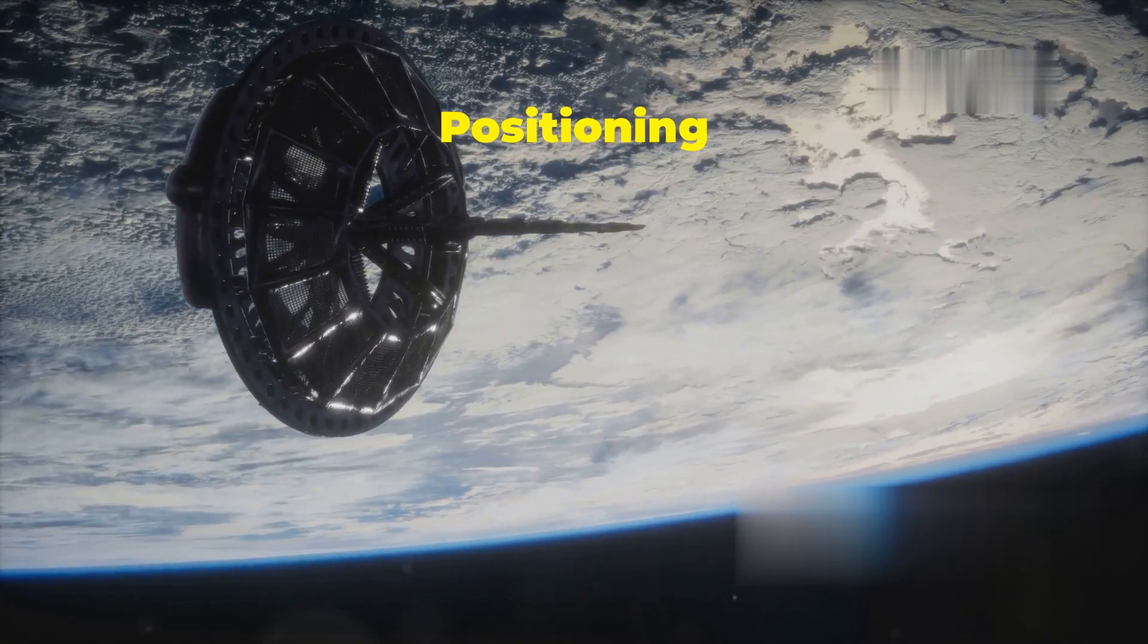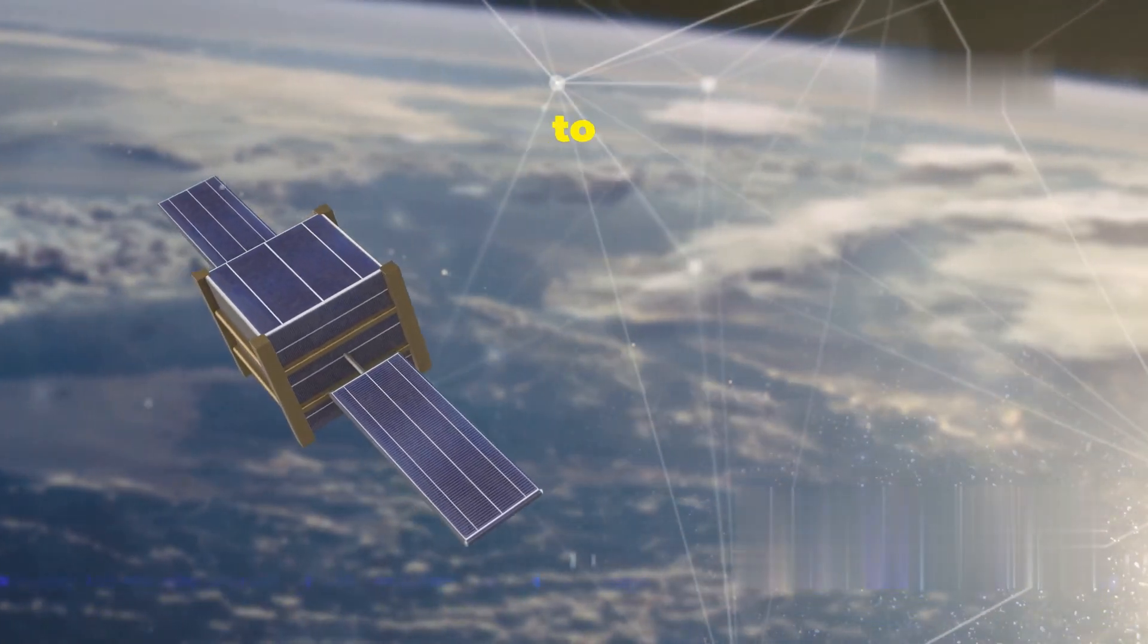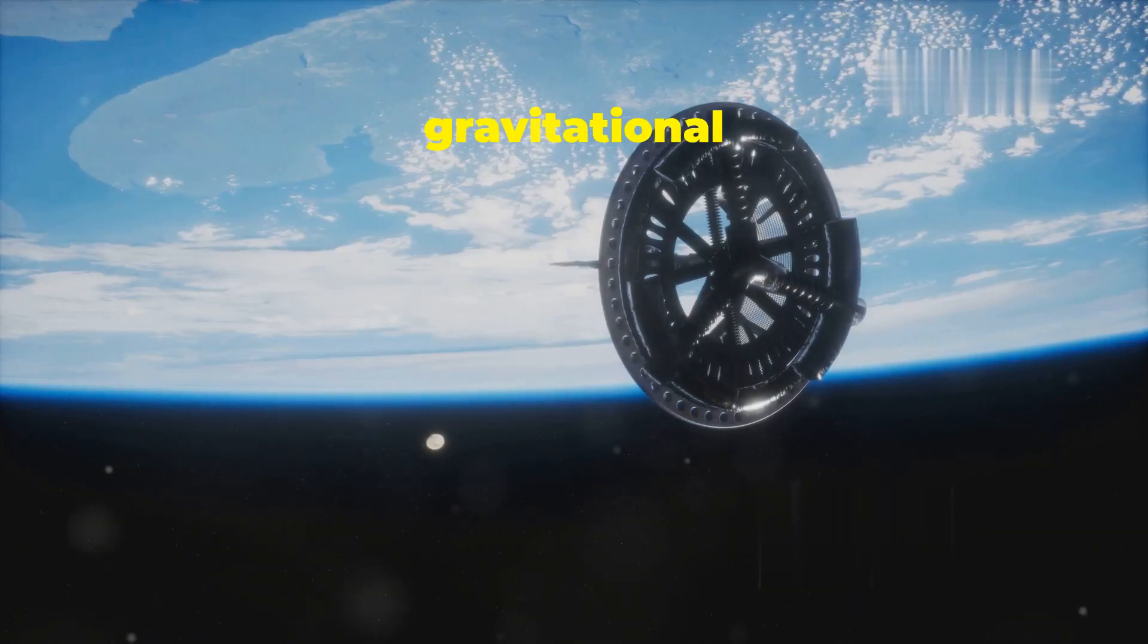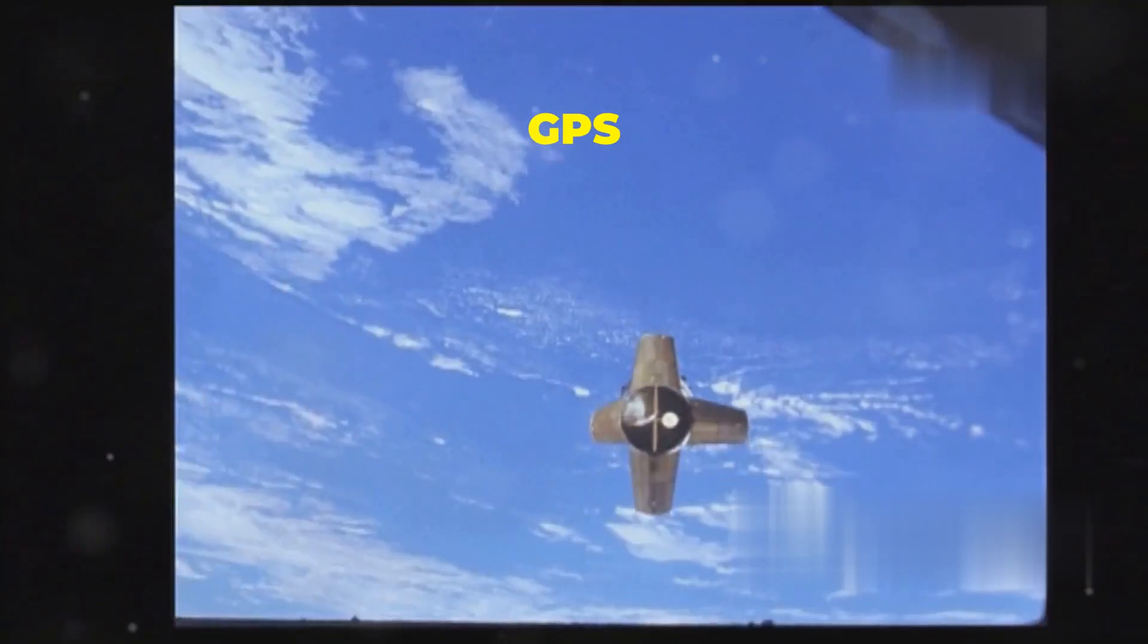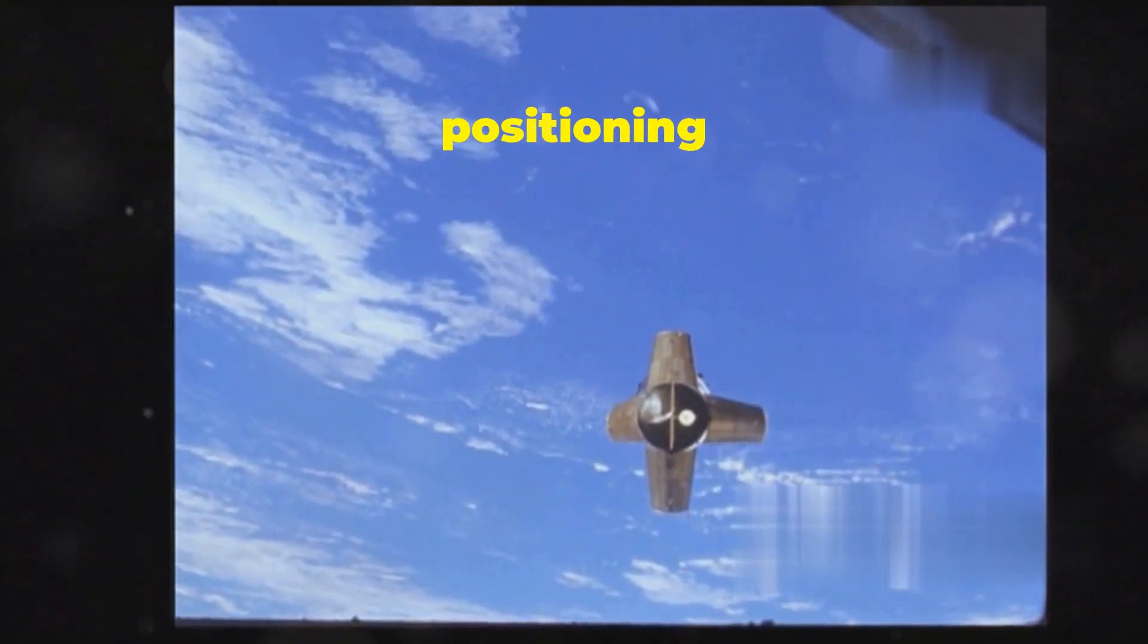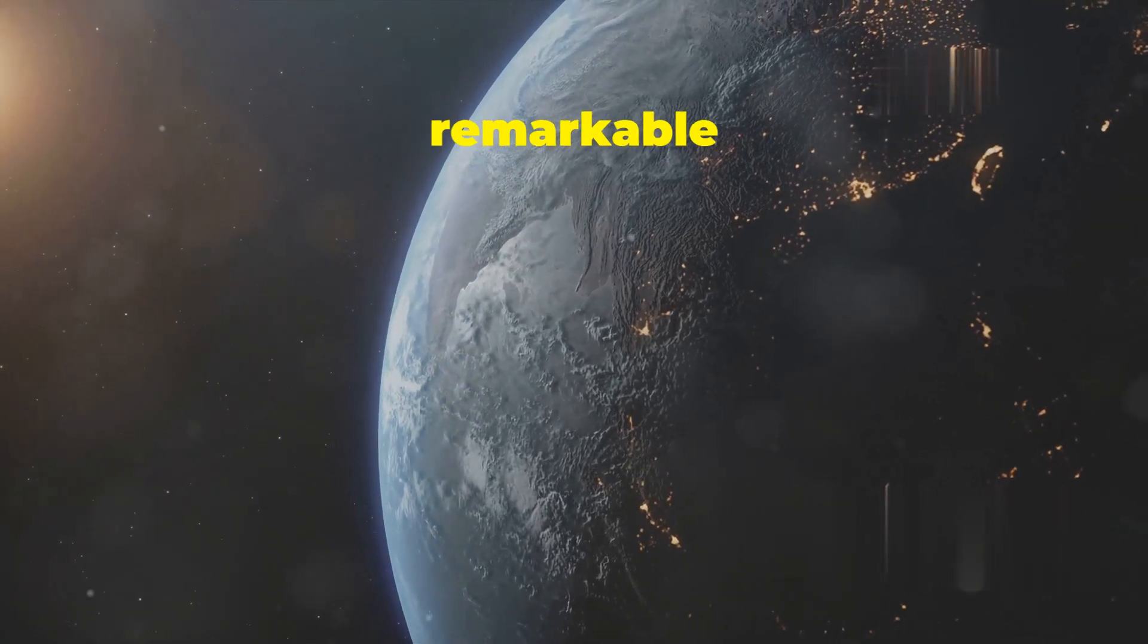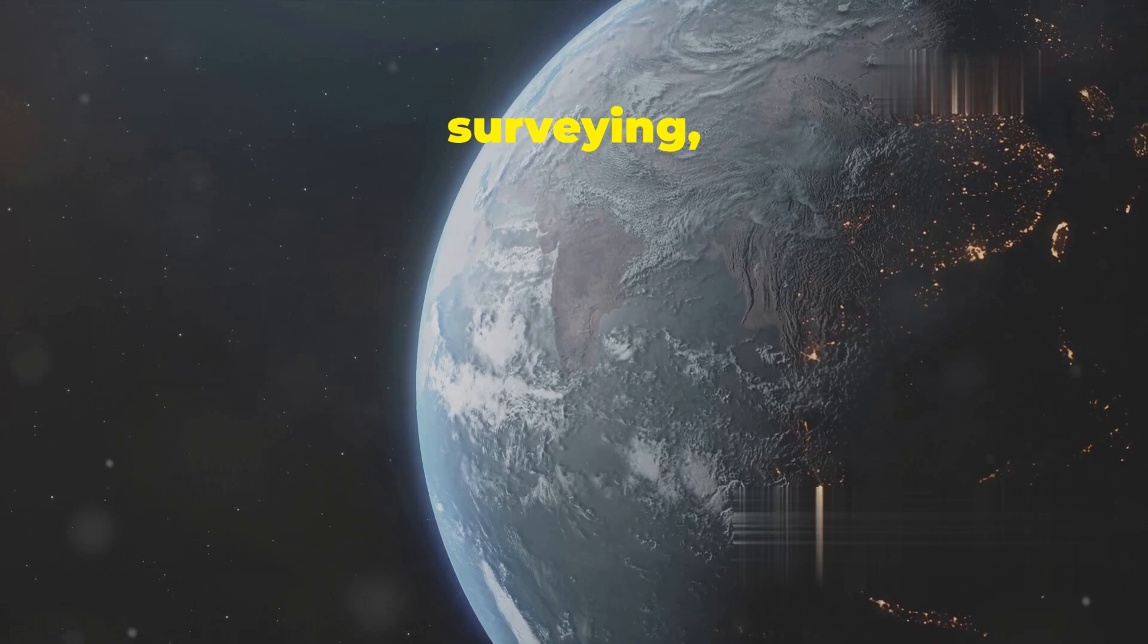For instance, the Global Positioning System, or GPS, which relies on a network of satellites to pinpoint locations on Earth, must factor in Earth's oblateness to maintain accuracy. The gravitational variations caused by the equatorial bulge affect the orbits of GPS satellites, and neglecting these variations would result in significant positioning errors. By incorporating Earth's precise shape into GPS calculations, we can achieve remarkable accuracy, often within a few meters, revolutionizing navigation.